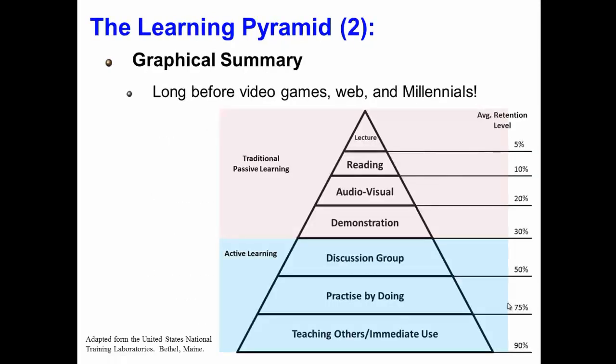Here's a graphical summary of the Learning Pyramid. A lecture-type activity leads to an average retention level of 5%, reading 10%, audio-visual 20%, and demonstration 30% — where the educator is demonstrating something to the learners. These four modes represent traditional passive learning, common in the majority of lectures today. When we have active learning, discussion groups lead to 50% average retention, practice by doing 75%, and finally, teaching others or immediate use of what you're learning leads to a 90% retention level.